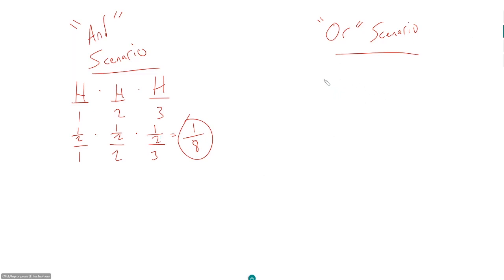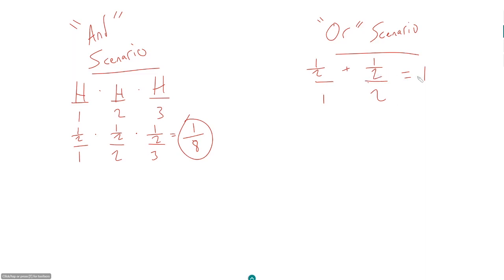The ones that confuse people are 'or' scenarios, because some people think: 'or means add.' That can get you into trouble. If I ask: what is the probability of getting heads on the first or second coin flip when I flip a coin twice? If you just add the probabilities — one half plus one half — you get one, or 100%, which of course makes no sense, because it's possible to get two tails. So you can't have a 100% chance of getting heads.